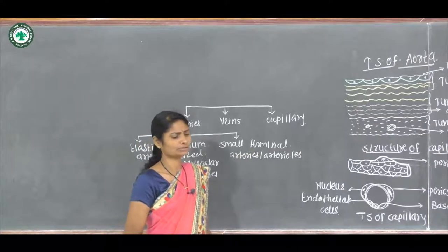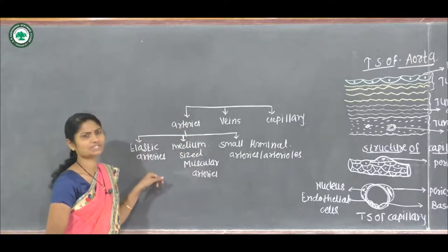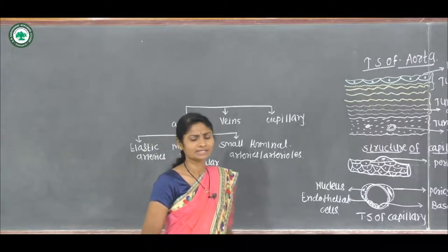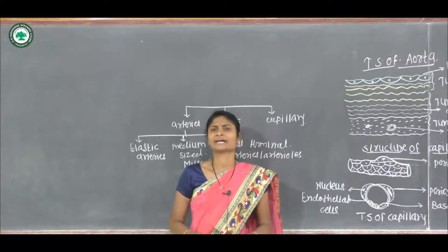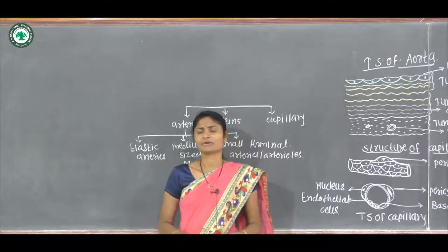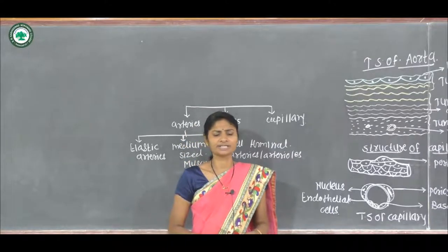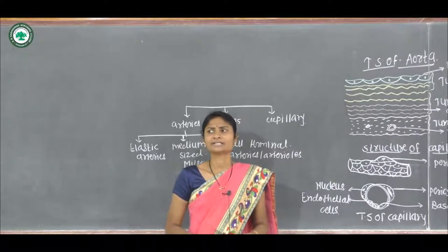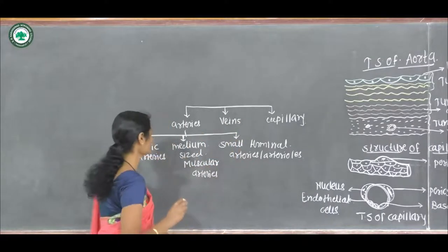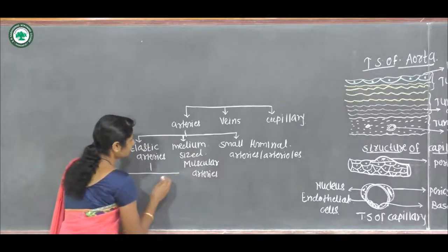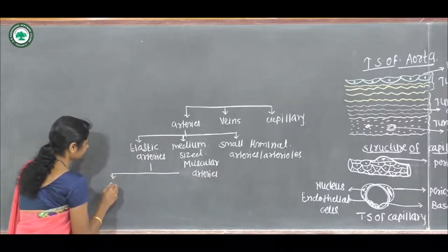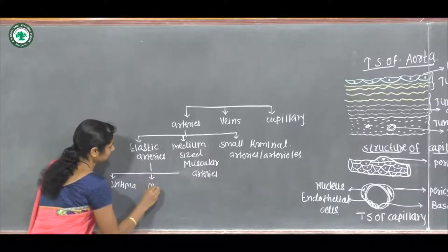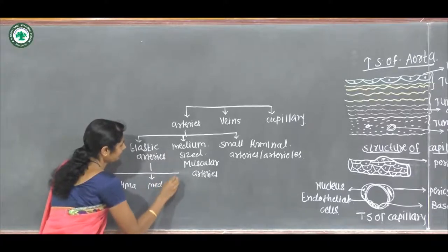Elastic arteries are also called conducting arteries because they conduct blood from the heart to the medium-sized arteries. Examples include the dorsal aorta and pulmonary artery. The wall of these arteries shows three different coats: tunica intima, tunica media, and tunica adventitia.